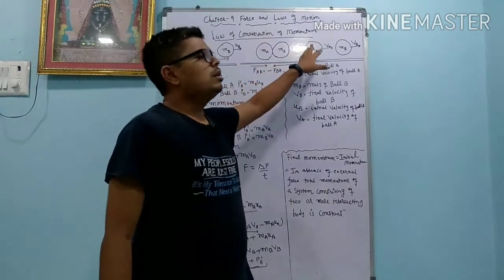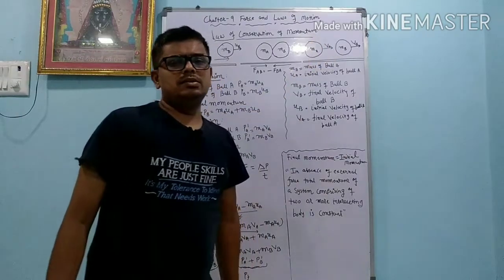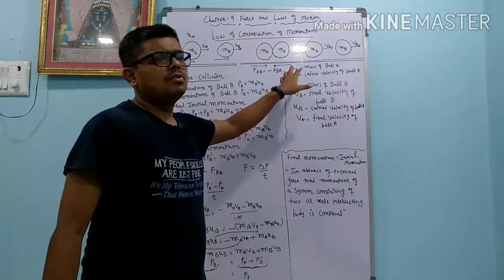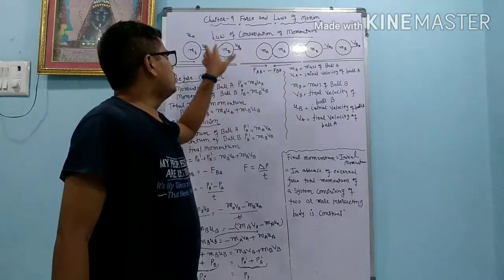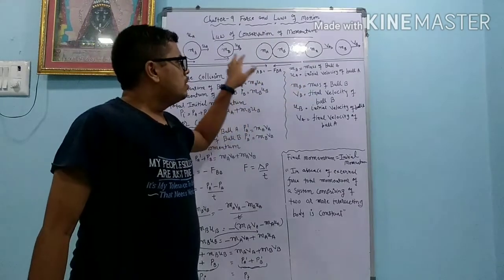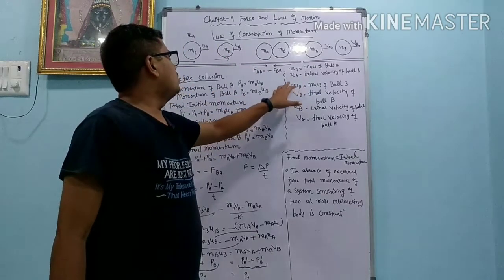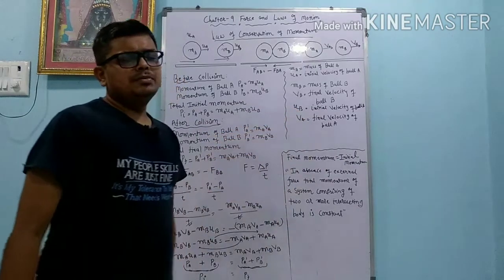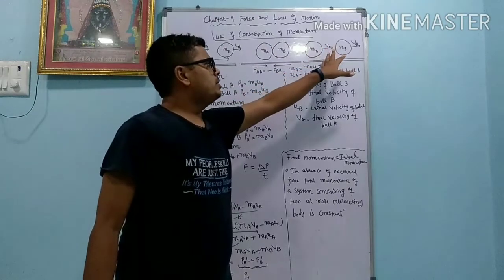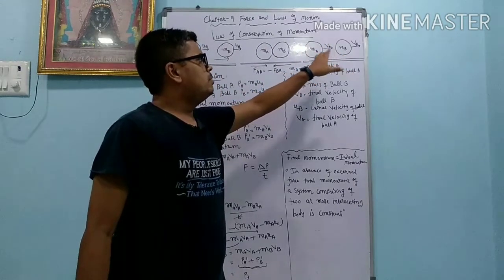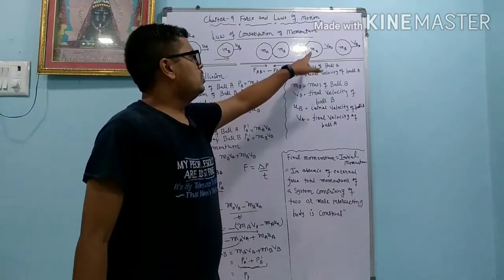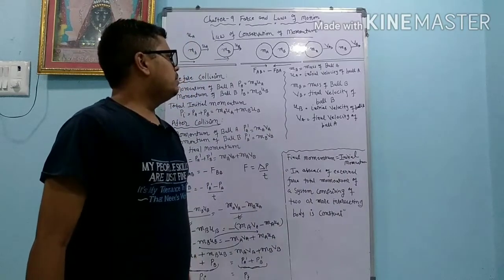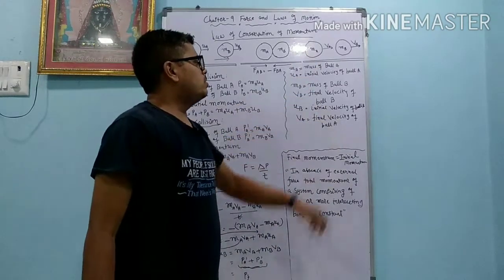After collision, the velocity of ball A is changed and the velocity of ball B is changed. Consider that mass of ball A is MA, initial velocity of ball A is UA, and mass of ball B is MB, initial velocity of ball B is UB. After collision, their masses remain the same — MA and MB — but their velocities are different. So after collision, the final velocity of ball A is VA and the final velocity of ball B is VB.